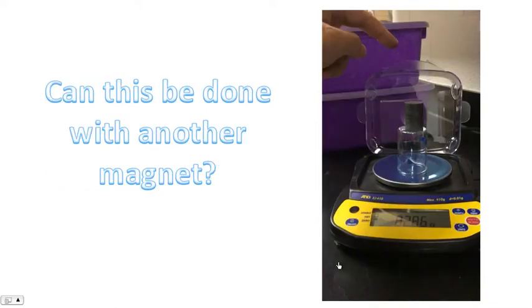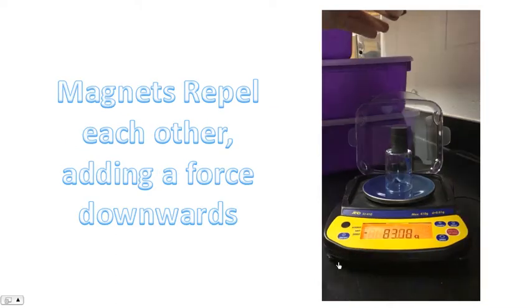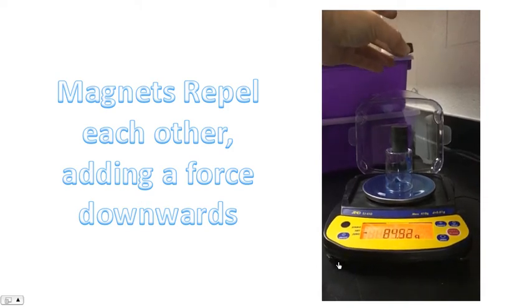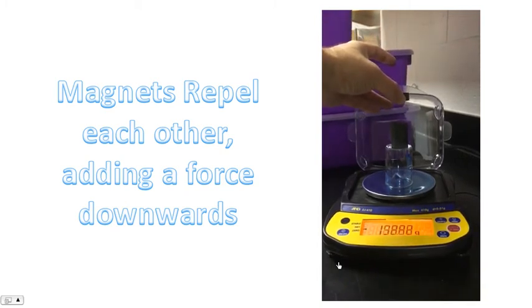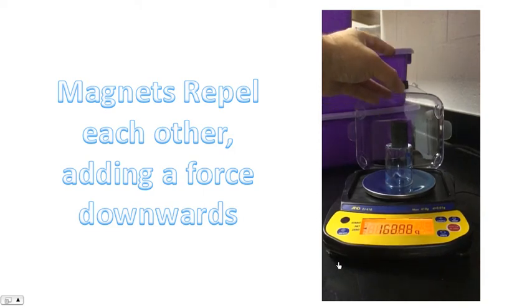Notice the mass got significantly lighter. So could this be done with another magnet? Well, yes, we can. When magnets repel each other, we're adding a force downwards. Let's see what happens. Notice, because the magnets are repelling each other, and we're adding a force downwards, the scale registers a much greater mass. And literally at that point, I could really feel the force in my fingertips as I was holding the other magnet, and they were repelling each other.